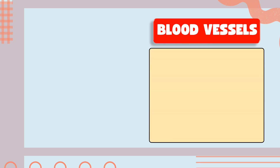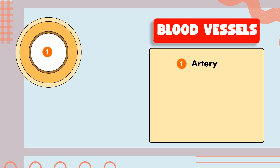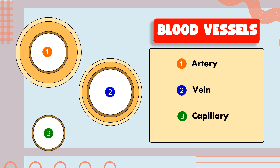Now, generally humans have three kinds of blood vessels: first, arteries; then veins; and capillaries. Let's discuss all three of these in detail.